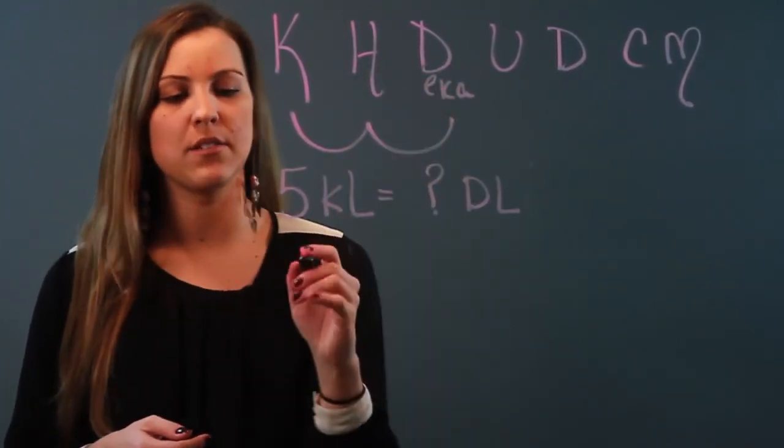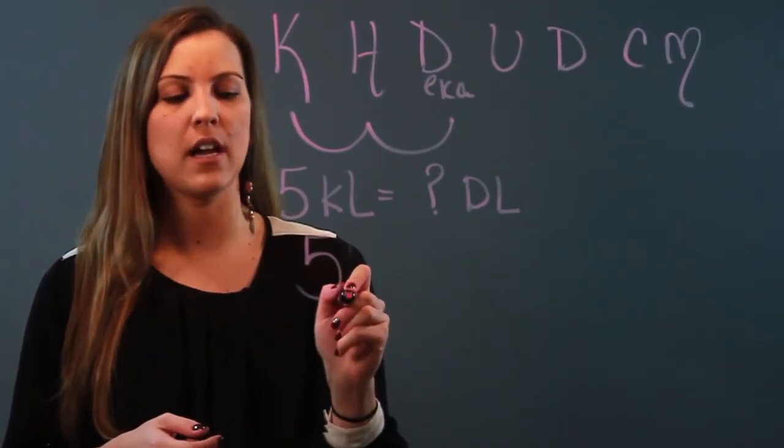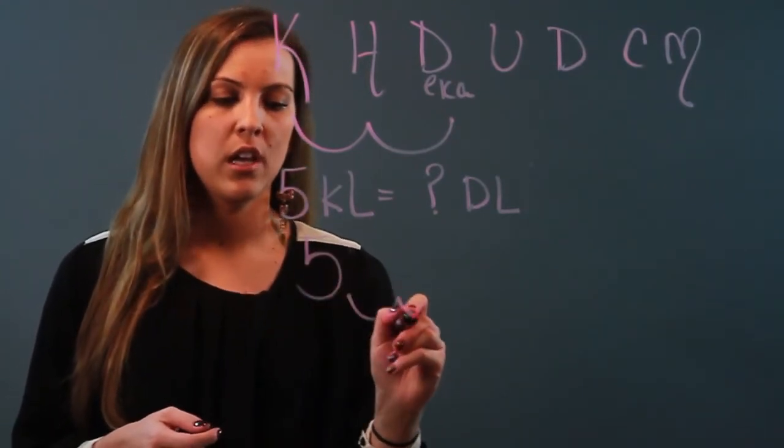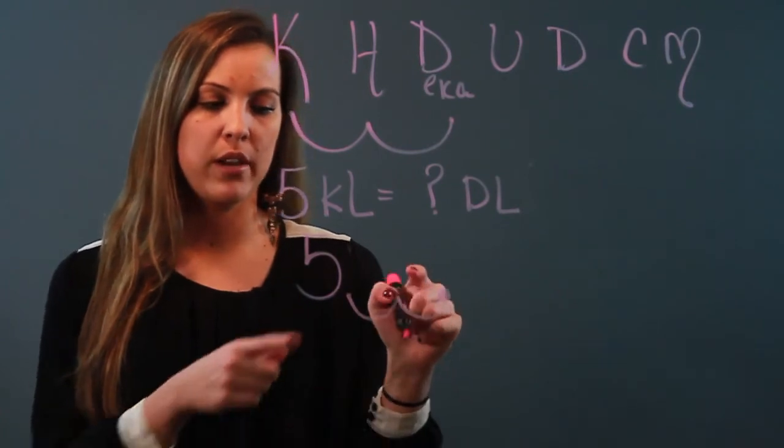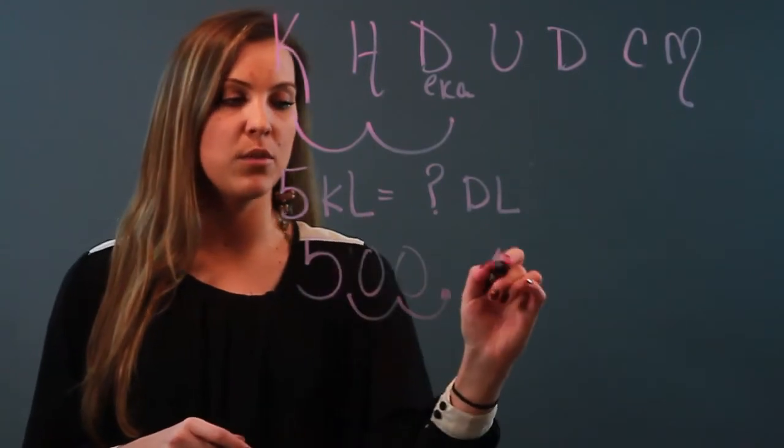I take my five, and when it has no decimal point, think of money—you're going to put it right after it like dollars, and you're going to go one, two. That's your new decimal point. Fill in any empty spaces with zeros, so that means that five kiloliters is equal to 500 decaliters.